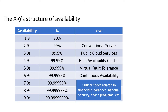Five nines means 99.999% availability, which is generally used for continuous availability. The further seven nines, eight nines, and nine nines structures are generally used for critical nodes related to financial clearance services, national security, and space programs.